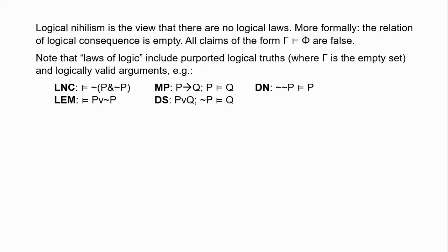These are just some examples from classical propositional logic. Obviously there are more sophisticated kinds of logic, but the logical nihilist will hold that all such claims are false — any claim essentially involving the entailment symbol.